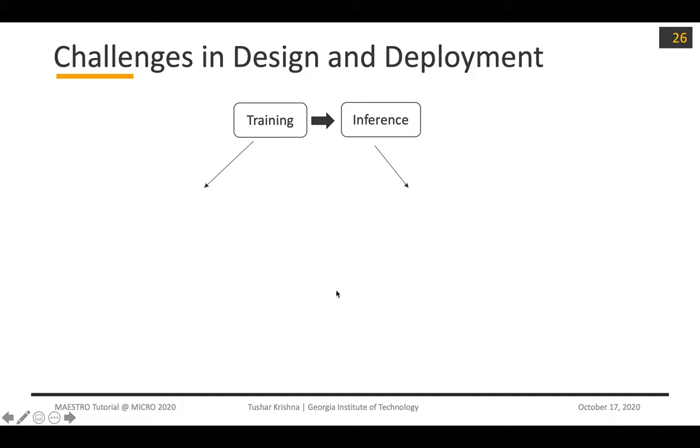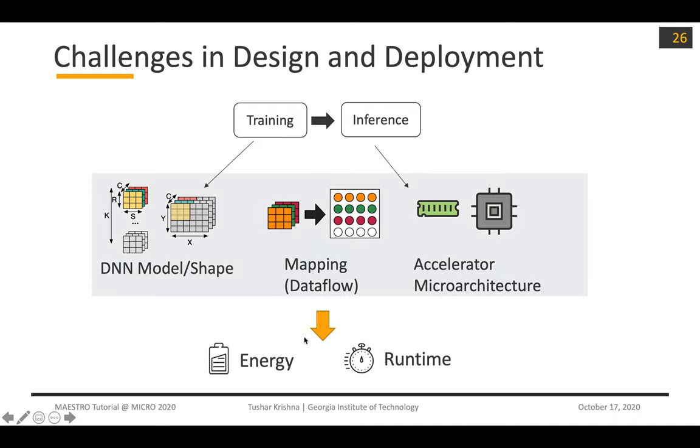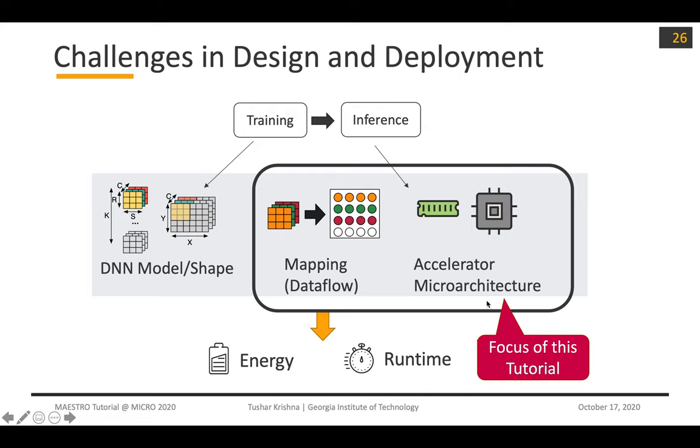One of the key challenges in designing and deploying DNNs is that once you have a model you've trained, at the inference stage, you have to take this model, map it onto your hardware, which has hundreds or thousands of processing elements. They might be myriad accelerator microarchitectures. Together, this determines your overall energy efficiency and runtime. The focus of this tutorial and Maestro is essentially on this piece: the mapping piece onto hardware and various accelerator microarchitectures.